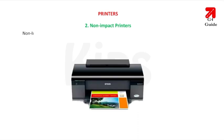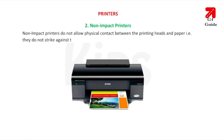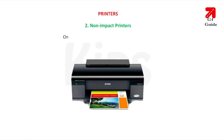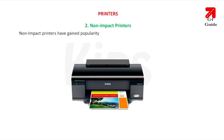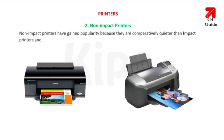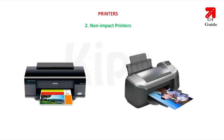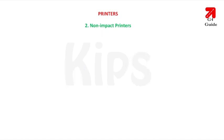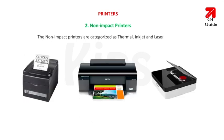Non-impact printers do not allow physical contact between the printing heads and paper. That is, they do not strike against the inked ribbon or the paper being printed. Only the ink used for printing touches the paper. Non-impact printers have gained popularity because they are comparatively quieter than impact printers and have better quality. In addition, they also produce colored graphics. The non-impact printers are categorized as thermal, inkjet and laser printers.